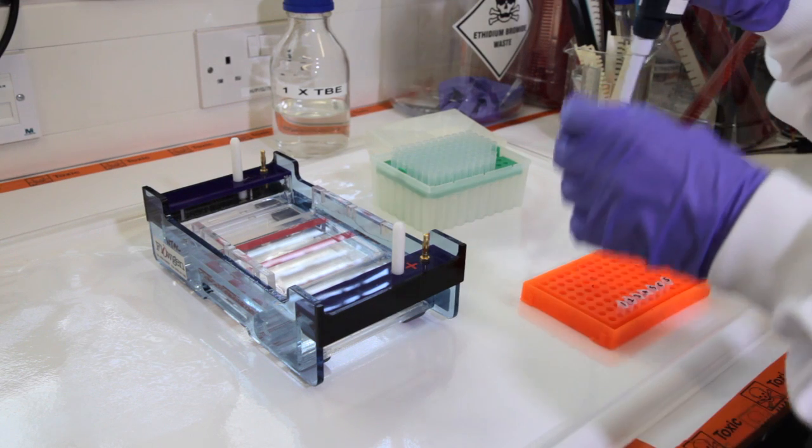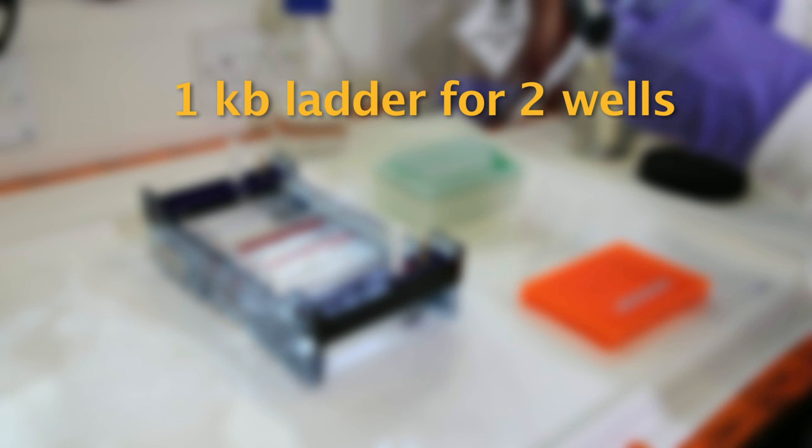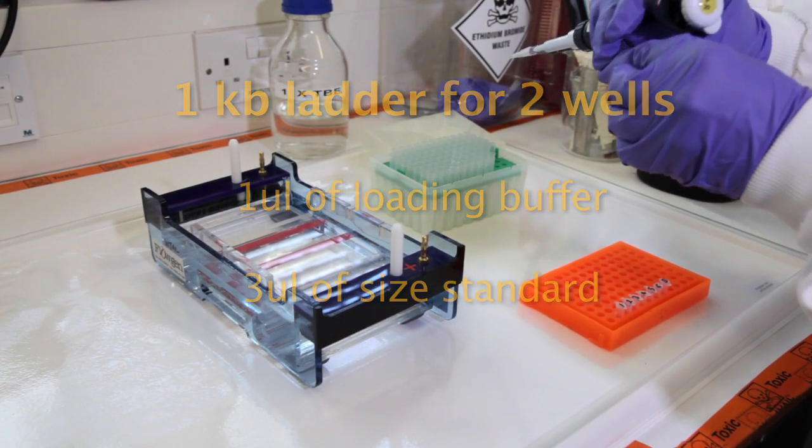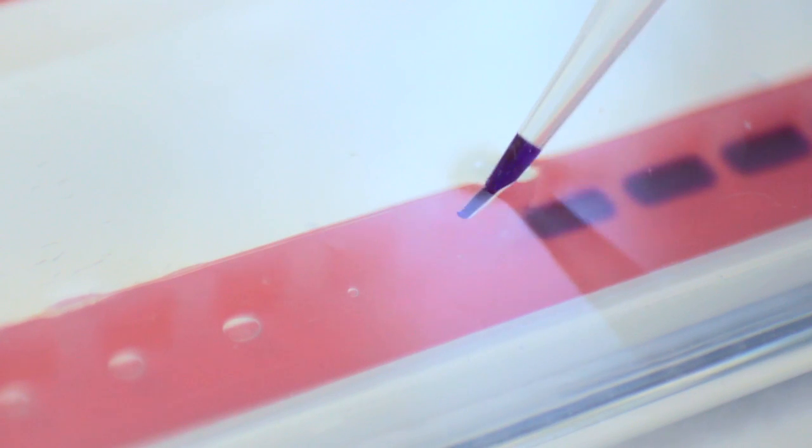Now make up two lots of size standard. Today we will use a 1 KB ladder. To make enough for two wells combine 1 microliter of loading buffer and 3 microliters of size standard. Carefully load 2 microliters of the size standard into the first well, taking care not to pierce the bottom of the well with the pipette tip. Keep the tip of the pipette just above the bottom of the well.